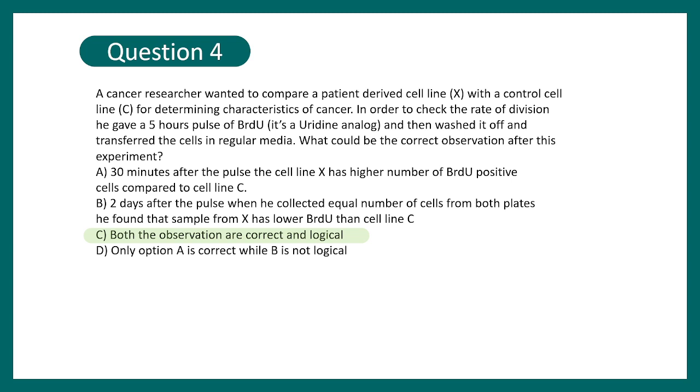Now when he looks after two days, by that time what happens? Cells are dividing in the plates. Cancer cells are dividing at a very high rate whereas normal cells are not dividing that high rate compared to a cancer cell line. So in cancer cell line what happens is BrdU is diluted. Now if you take a little bit amount of cell random cell sample from those plates, the cancer cell line would even show higher dilution of BrdU because it's basically dividing much at a much higher pace than the control cell line C. So both of these options are correct.